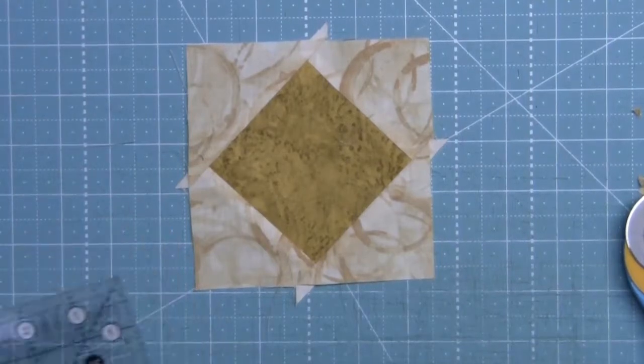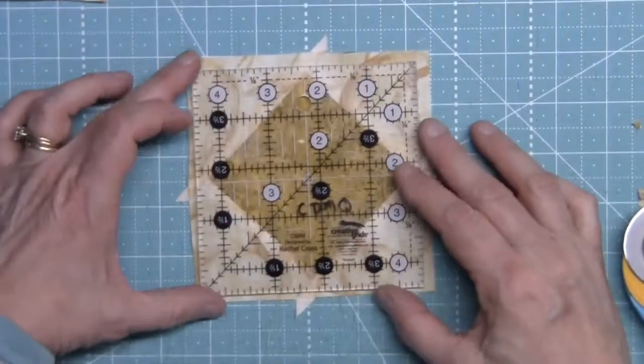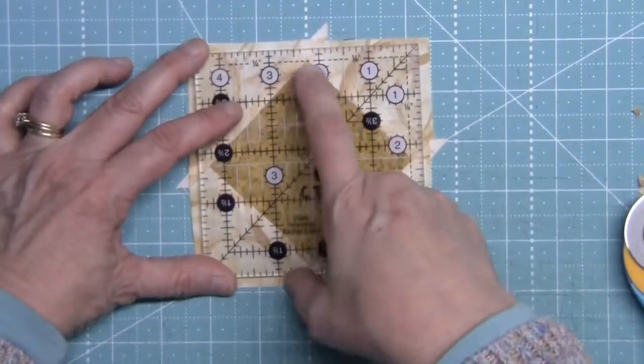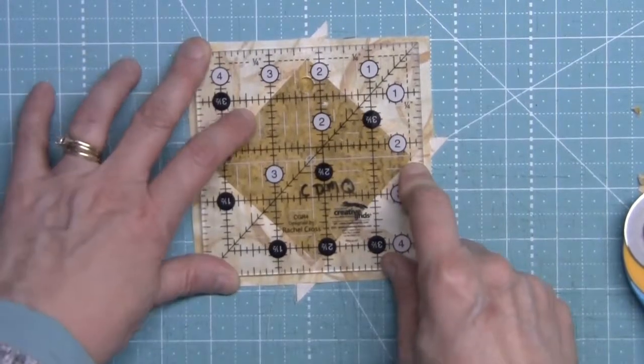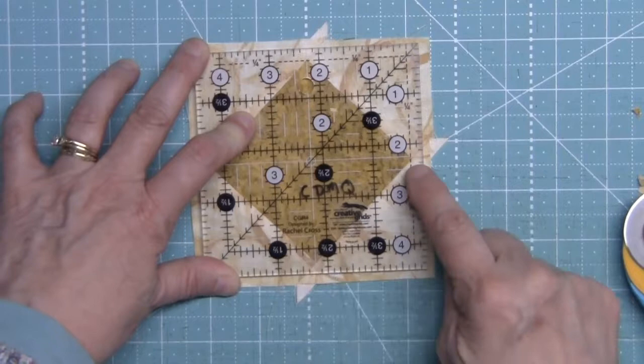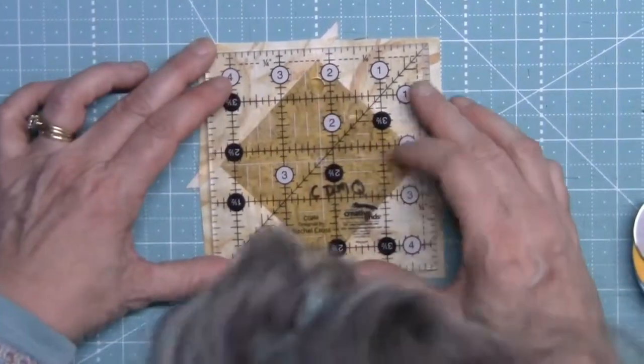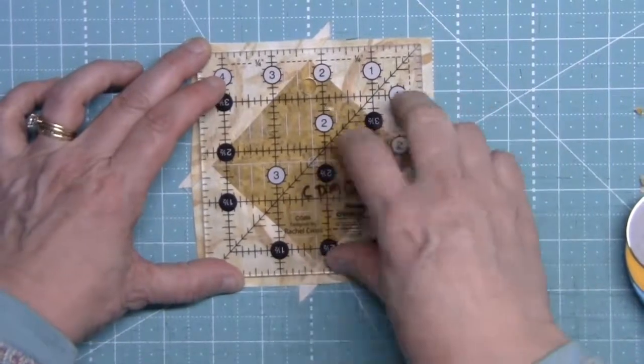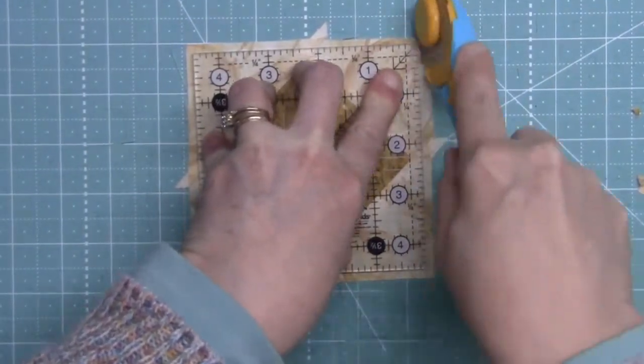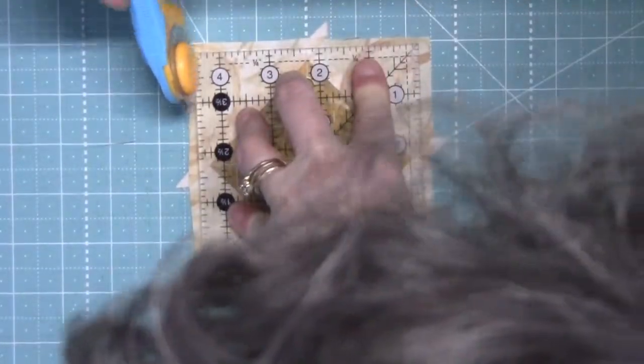I've got my blocks, my square in a square is done, and now I'm going to use a four and a half inch square ruler because that's just like cheating, but the key thing is I want the points of the square in the middle to be at the two and a quarter inch marks on all four sides. So once I have the ruler aligned, I can then just go around and trim off the four sides to make my four and a half inch square in a square unit.